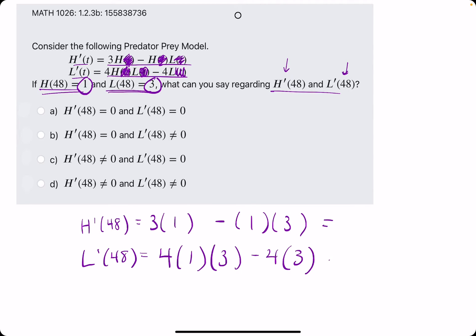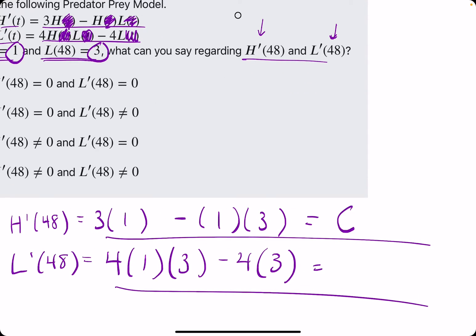Alright, so for H' we get 3 minus 3, which is 0. For the second one, L' we get 4 times 3, which is 12, minus 4 times 3, which is 12. So 12 minus 12 is 0.